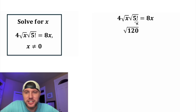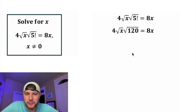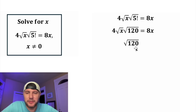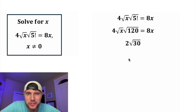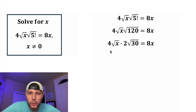So this changes into the square root of 120. Now let's go further with the square root of 120. 120 is the same thing as 4 times 30. The 4 and the 30 can each have their own square root, and the square root of 4 is equal to 2. For the next step, this 4 can multiply by this 2 to give us 8.